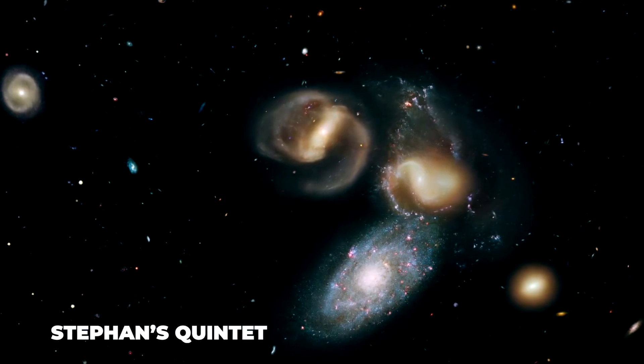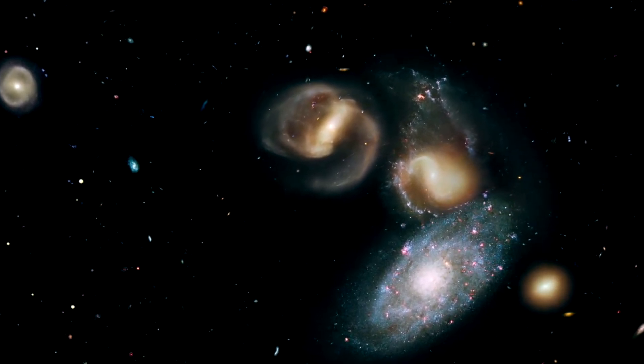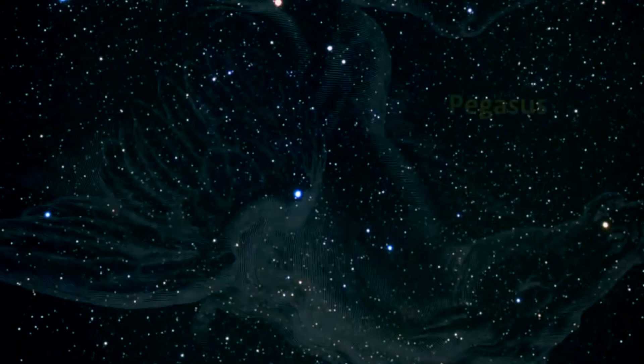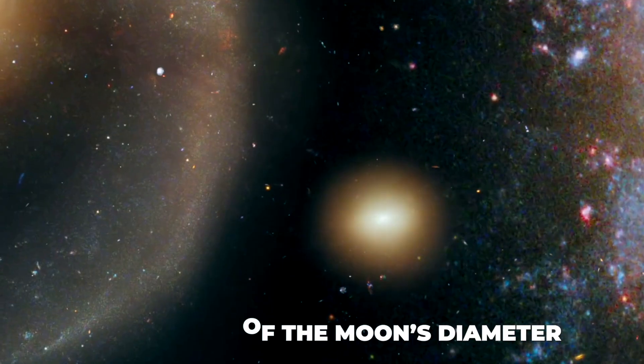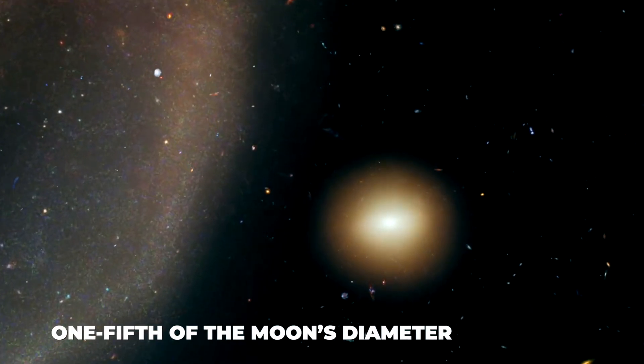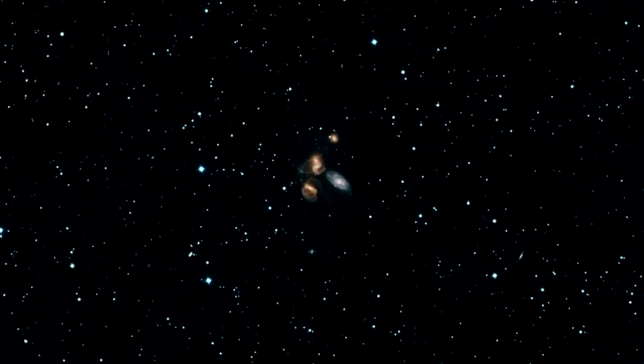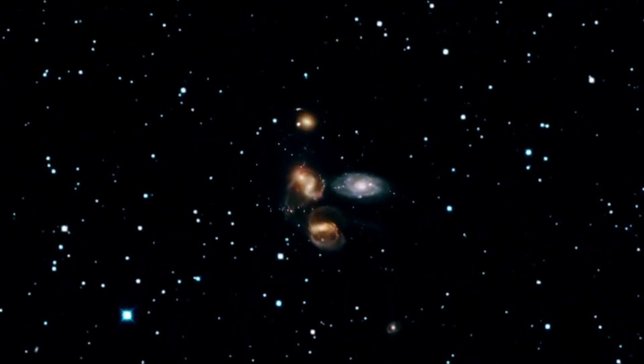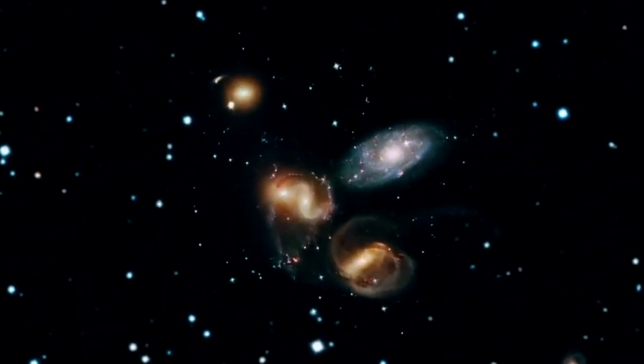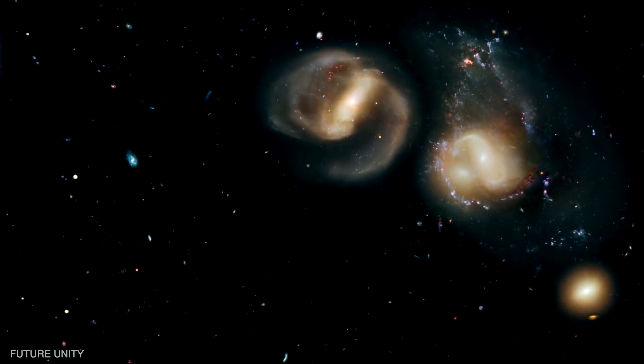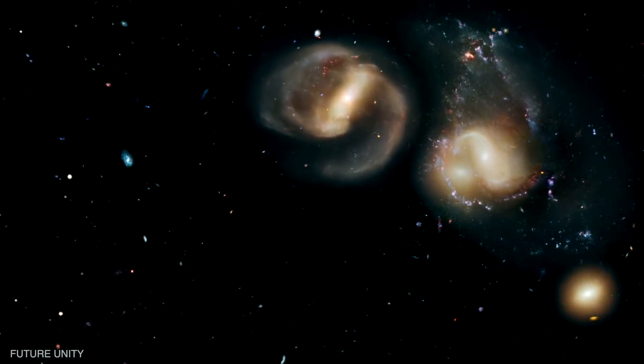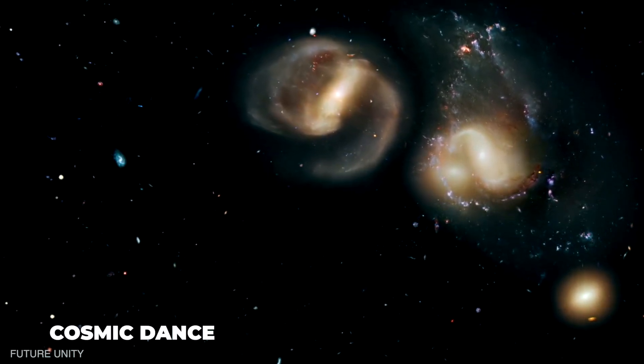Stefan's Quintet is a compact group of five galaxies surrounded by dust, located in the constellation Pegasus. It covers about one-fifth of the moon's diameter. Together, these five galaxies are known as Hixson Compact Group 92, HCG 92. But quintet when only four of the galaxies come close to each other and perform a cosmic dance.